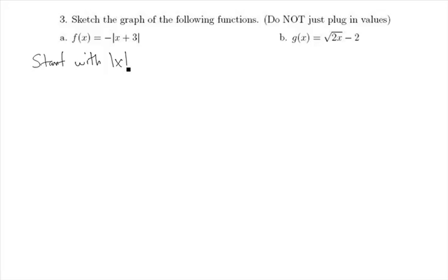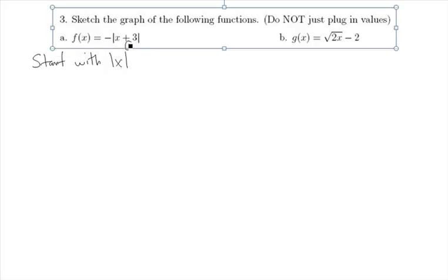Well, which ones do we do first? Notice that the very first thing that happens to the x value is we add 3. So that's the first transformation we're going to do to the graph. The first thing we're going to do is add 3 to the x values, which causes a shift horizontally to the left 3 units.